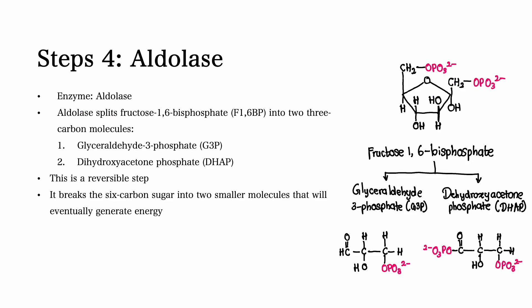Step number four. Aldolase is the main enzyme in step number four. In this step, aldolase splits fructose 1,6-bisphosphate into two 3-carbon molecules. One of the molecules is glyceraldehyde 3-phosphate, also known as G3P, and the other molecule is dihydroxyacetone phosphate, also known as DHAP. This is a reversible reaction, and this step breaks down the 6-carbon sugar into two smaller molecules that will eventually generate energy.